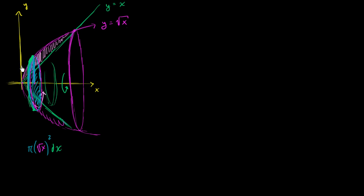So if we want to find the volume of the entire outer truffle before we carve out the center, we just take a sum of a bunch of these disks. For each x, we have another disk, and as x gets larger, the disks have a larger radius. We sum up all of those disks and take the limit as each disk gets infinitely thin with an infinite number of them. But we need to figure out our boundaries of integration — the two points where they intersect.